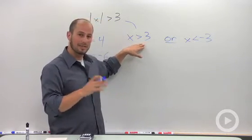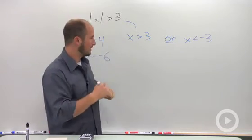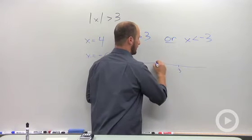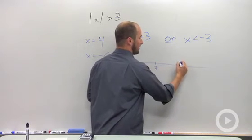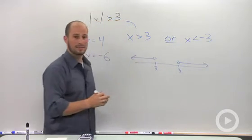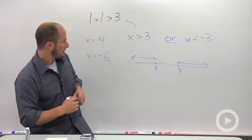This is dealing with a union. Another representation: here's 3, here's negative 3, the numbers that will satisfy it are on either extreme.